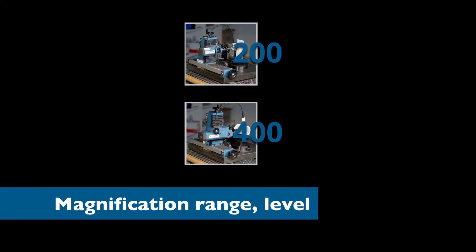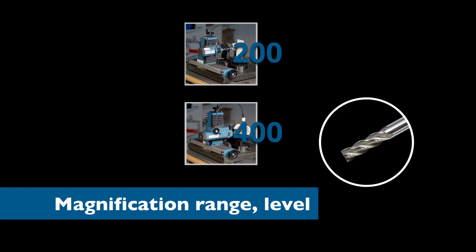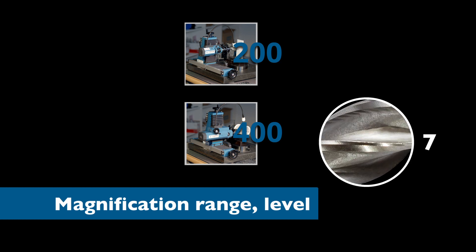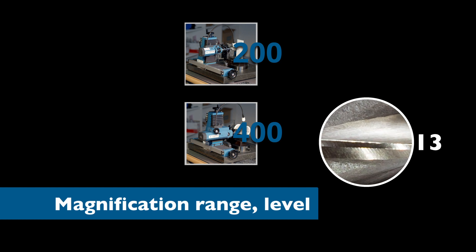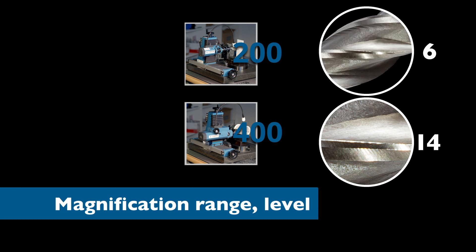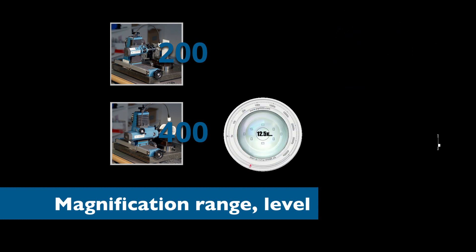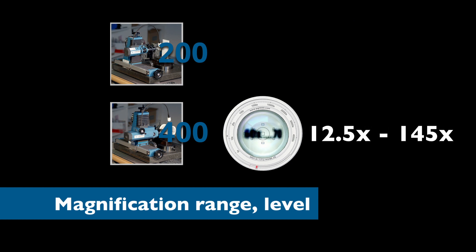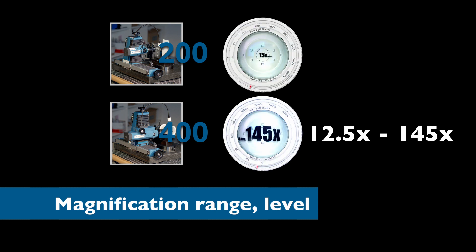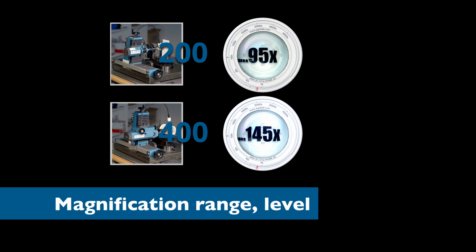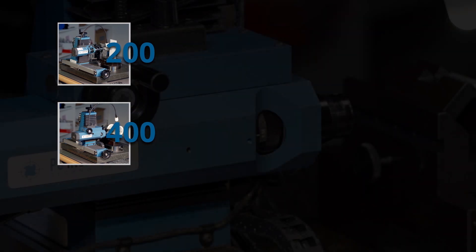The 200 and the 400 have differences in the level and range of magnification they can achieve. The 400 offers 14 magnification levels — more detents in a microscope means more options for the user when imaging. The PG-1200 has seven magnification levels. In terms of range, the PG-1400 offers 12.5x to 145x, while the PG-1200 offers 15x to 95x. The 400 also offers optional levels of magnification for inspecting large or micro tools.